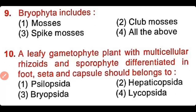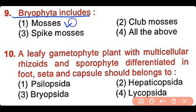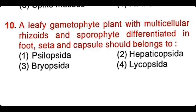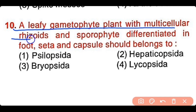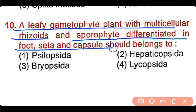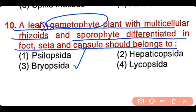Question number 9: Bryophyta includes mosses, clubmosses, spikemosses, or all of the above. The correct answer is option 1 — mosses are included in bryophytes. Question number 10: A leafy gametophytic plant with multicellular rhizoids and a sporophyte differentiated into seta and capsule should belong to Hepaticopsida, Anthocerotopsida, Bryopsida, or Lycopcida. The correct answer is option 3. Bryopsida has a leafy gametophyte and its sporophyte is differentiated into seta and capsule.